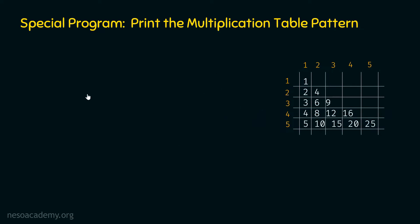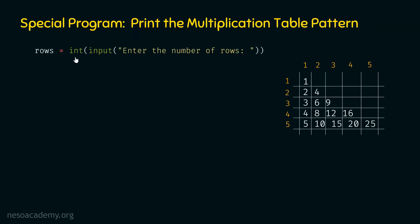Let's write the program. First, we need to ask the user to enter the number of rows using the input function with a prompt. We receive input as a string, so we convert it to integer by passing the input method directly to the int method. The line of code looks like: rows = int(input('Enter the number of rows')). This stores the integer value in the rows variable.